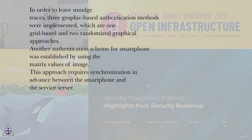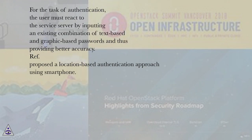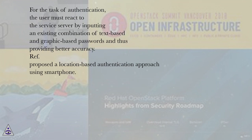Another authentication scheme for smartphones was established by using the matrix values of an image. This approach requires synchronization in advance between the smartphone and the service server. For the task of authentication, the user must react to the service server by inputting an existing combination of text-based and graphic-based passwords, thus providing better accuracy.